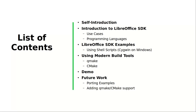Then we will talk about LibreOffice SDK examples. Most of these examples should be compiled and executed using shell scripts right now, and you have to use CygWin on Windows. But it is also possible to use modern build tools like QMake and CMake, and that's what I'm talking about today. After a demo, we will talk about future work, like porting examples from different languages to each other, and adding QMake and CMake support to these examples.